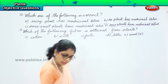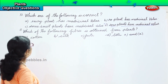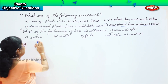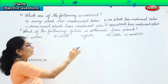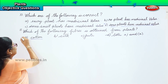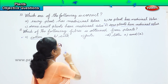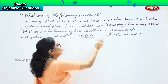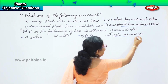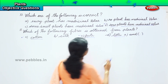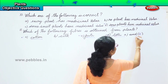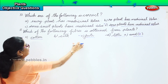Which of the following fibres is obtained from plants? Cotton - yes, we get cotton from plants. Silk - no. Jute - yes. So option D, both A and C, are correct. Both cotton and jute are obtained from plants.